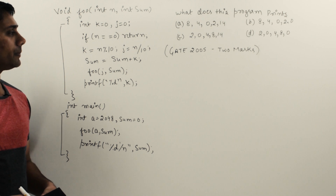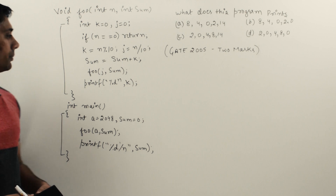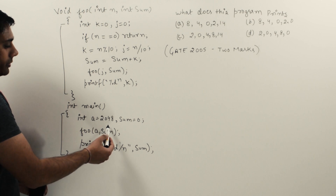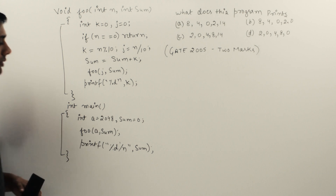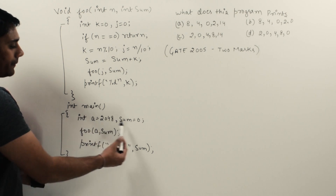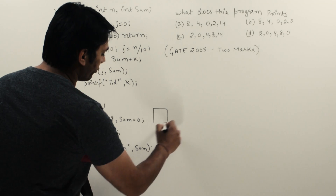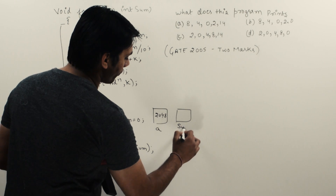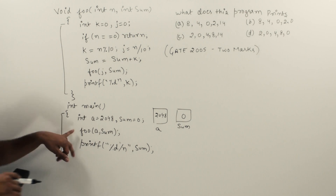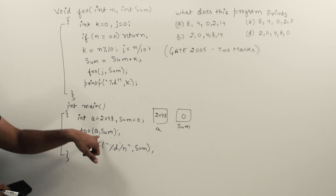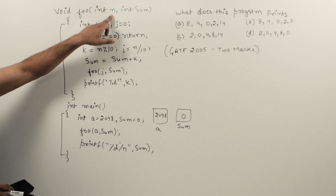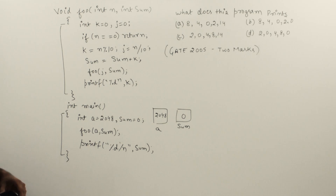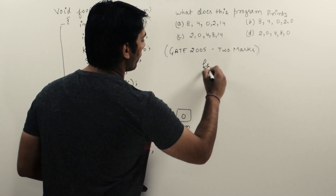This question was asked in GATE 2005 and it was a two-mark question based on recursive programming. In main, a is equal to 2048 and sum is equal to 0 — there are two variables. The value for variable a is 2048 and sum is 0. Then we call the function foo and pass the value of a and sum, so these values will be copied: n will be 2048 and sum will be 0.